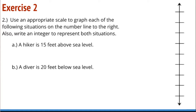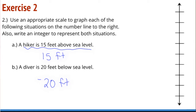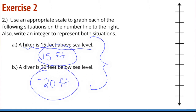Use an appropriate scale to graph each of the following situations on the number line. Also write an integer to represent both situations. One of our ICAN statements is that we can use an appropriate scale to create a number line. We have a hiker who is 15 feet above sea level — that's a positive integer of 15. And a diver who is 20 feet below sea level — that's negative 20 feet. To make a number line, I need to know what zero represents. Zero is sea level, so these numbers are in relation to zero.